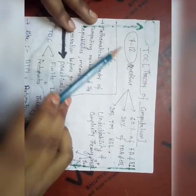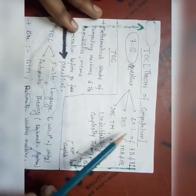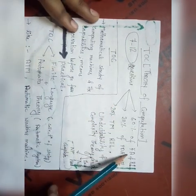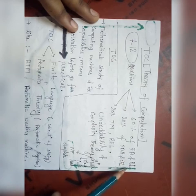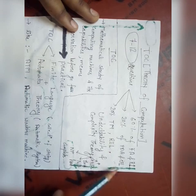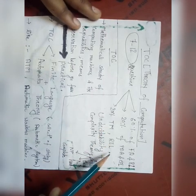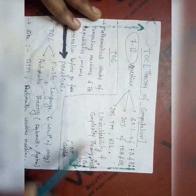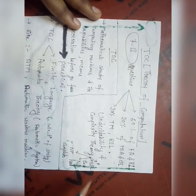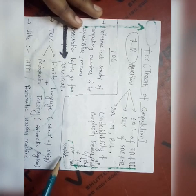There are 7 to 12 questions included in the GATE exam, in which 60% are from finite automata and regular language, 20% from pushdown automata and context-free language, and the remaining 20% from Turing machine, undecidability, and complexity theorems like P-class, NP-hard, and NP-complete.